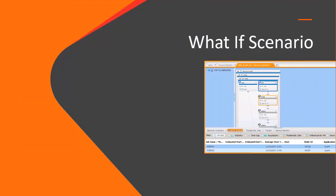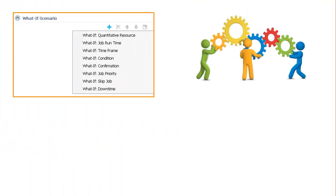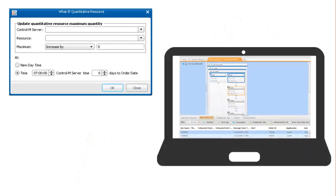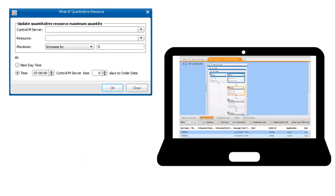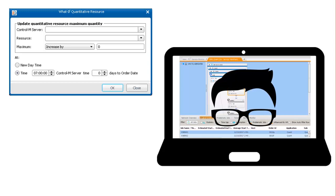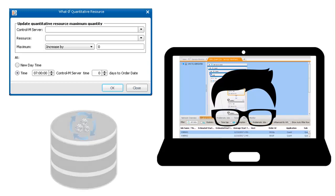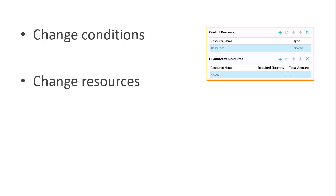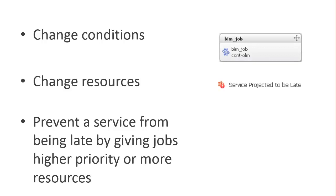Now let's move on to What-If Scenarios. You use What-If to evaluate various ways to solve an anticipated problem in a service by experimenting with the service. When you experiment, it's a local simulation. This means that only you can see the changes that you make — it does not affect the active jobs database. You can change the conditions of a job, change resources to proactively assess whether jobs will take longer than usual to run, and prevent a service from being late by giving the jobs a higher priority or more resources.